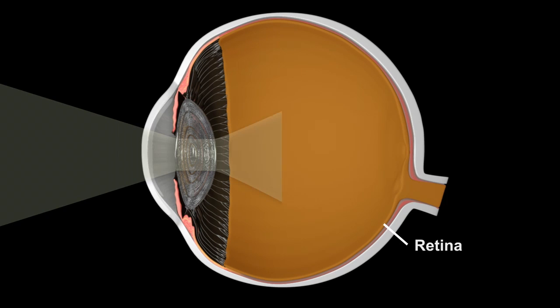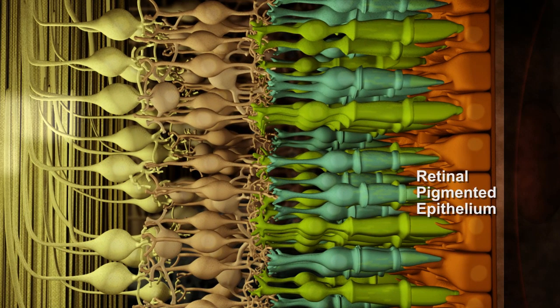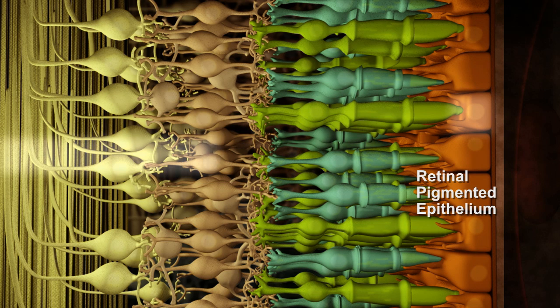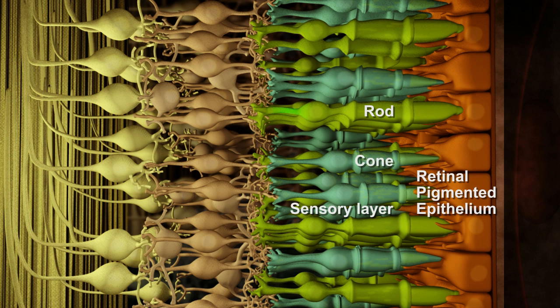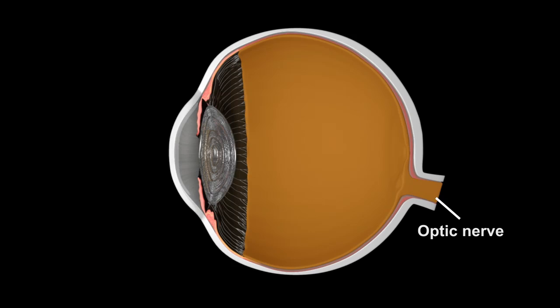The retina is responsible for receiving light information. Its pigmented layer helps to capture light. The retina's sensory layer has rod and cone photoreceptors that detect and translate light information into nerve impulses. The signal is passed through the retina's layers of neurons and carried to the optic nerve located at the back of the eye, where the signal is gathered and sent to the brain.